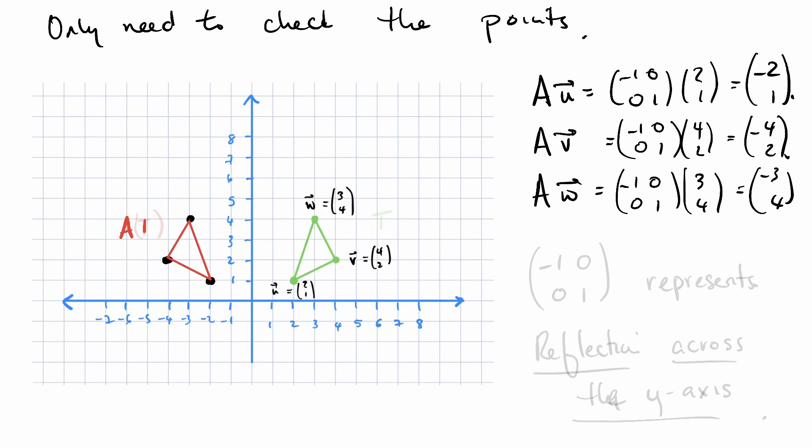This is A of our triangle T. All over here, we've got T. This allows us to easily see what this matrix does to T and therefore what it will do to the entire Euclidean space. Negative 1, 0, 0, 1 is a matrix that represents reflection across the y-axis.